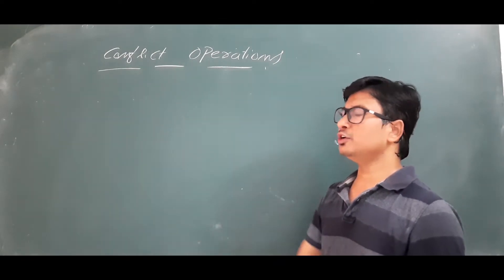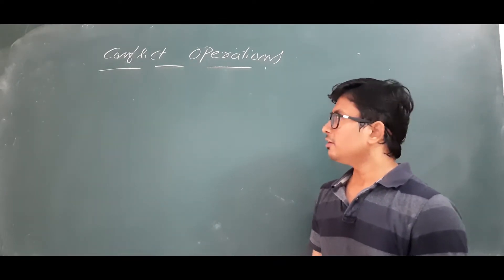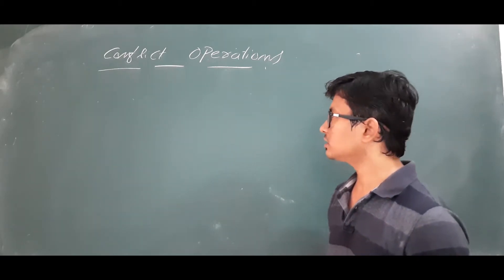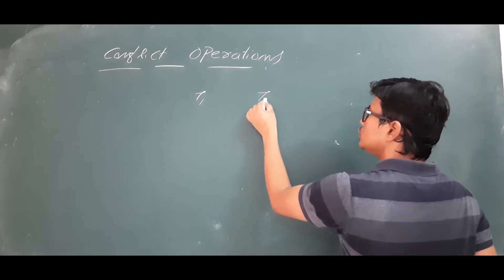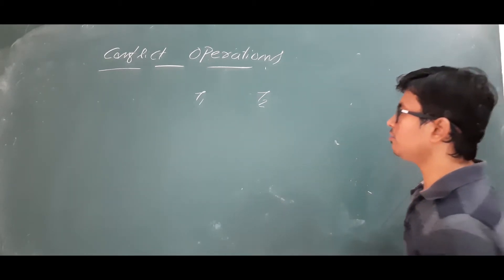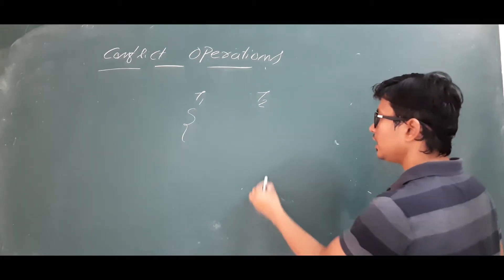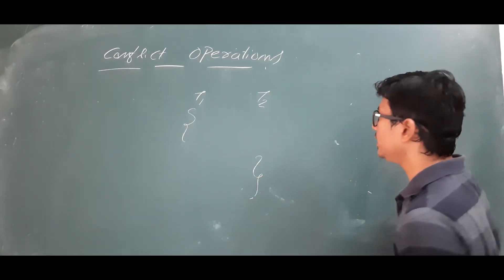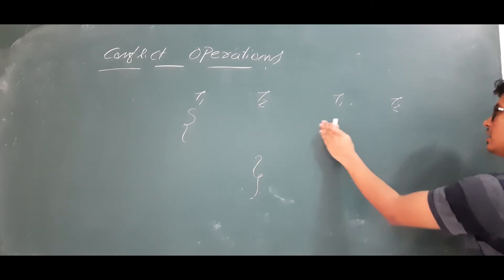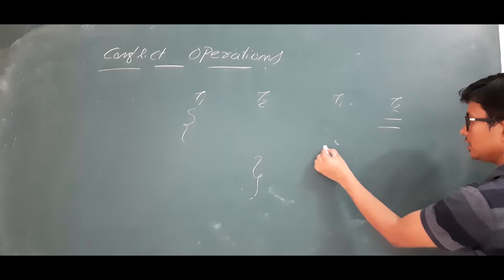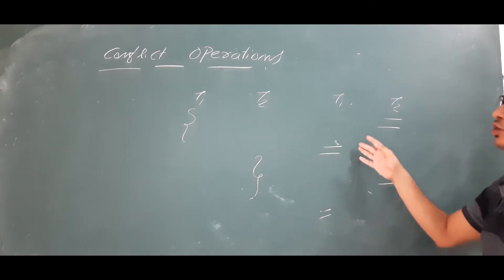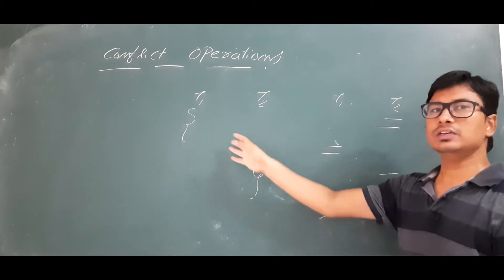Good morning students. In this video we will discuss conflict operations. But before discussing what conflict operations are, let me discuss the background. We have two transactions that can be executed concurrently or in a serial way. In a serial schedule, you perform all operations of T1 then all operations of T2. In a non-serial schedule, operations from T1 and T2 are interleaved. That is called a non-serial or concurrent schedule.